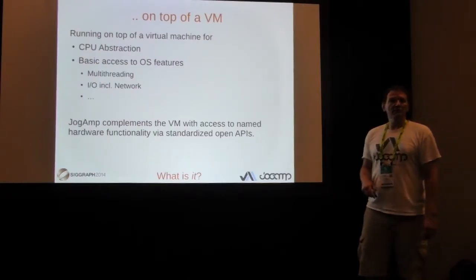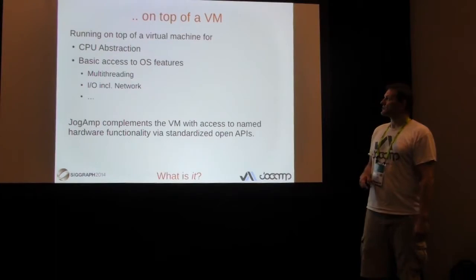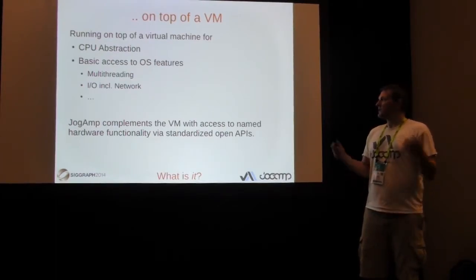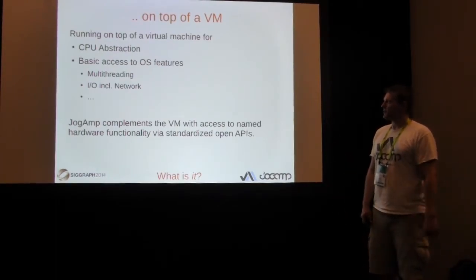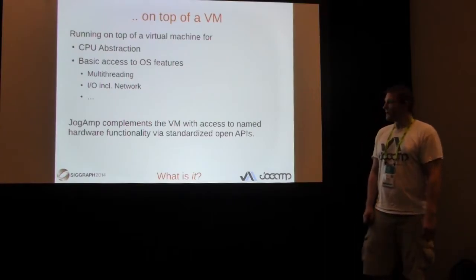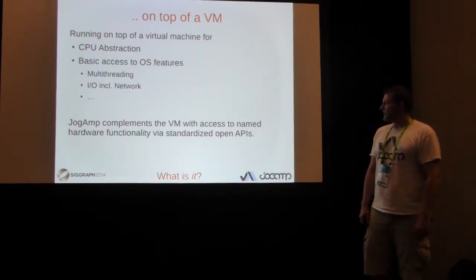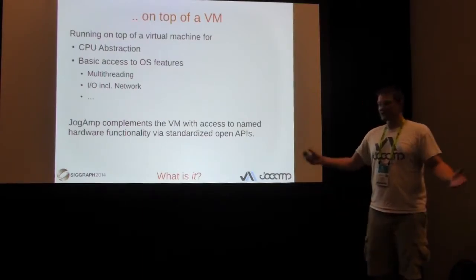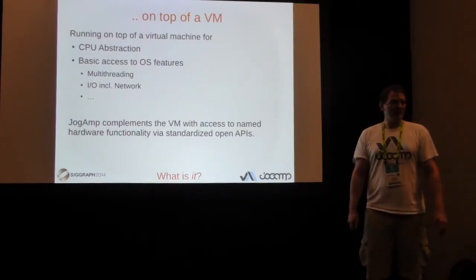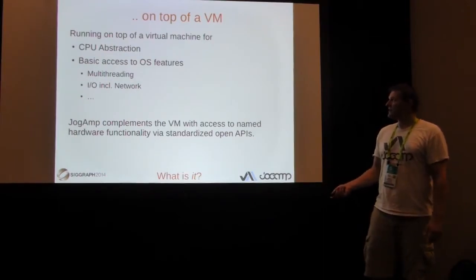We run on top of a VM — a virtual machine for CPU abstraction — providing basic access to operating system features: multi-threading, IO, networking, et cetera. JOGL complements the VM with access to native functionalities and open APIs, emphasizing the VM layer.